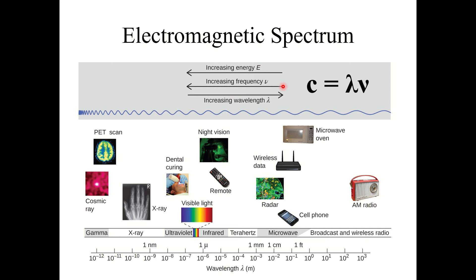The electromagnetic spectrum is the representation of all the different types of electromagnetic radiation sorted by their wavelength values. On the left end are short wavelengths with high frequencies and high energy, while on the right side are longer wavelengths with lower frequencies and lower energy. Visible light falls in the 350 to 700 nanometer range — a pretty narrow range — and the rest of this light is invisible to our eyes, but it is there.